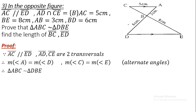Therefore, since two angles in the first triangle equal two angles in the second triangle, we can conclude that the triangles are similar. The corresponding sides are proportional, so we can set up the ratios and solve for the unknown lengths.